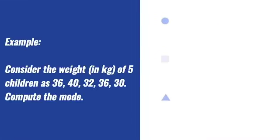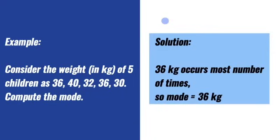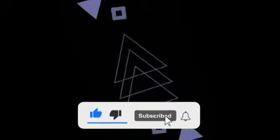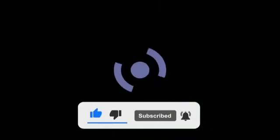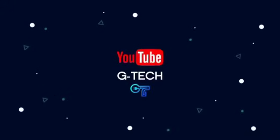Example. Consider the weight in kg of 5 children as 36, 40, 32, 36, 30. Compute the mode. Solution. 36 kg occurs most number of times, so mode equals 36 kilograms.